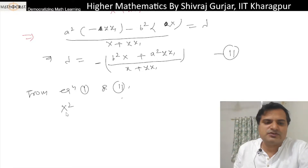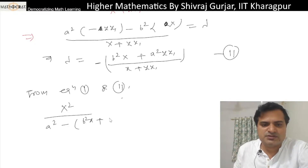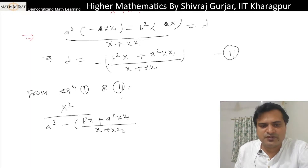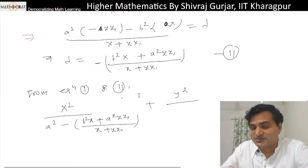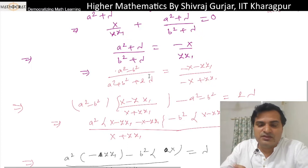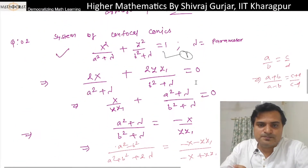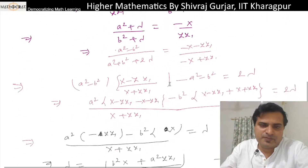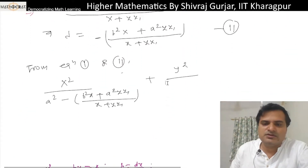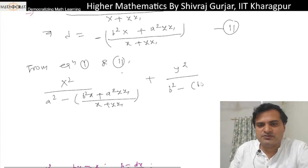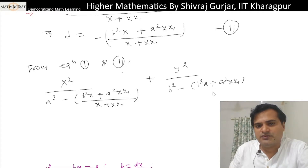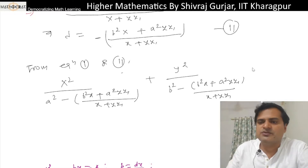Therefore x² divided by (a² + lambda), which is minus (b²·x + a²·y·y₁)/(x + y·y₁). And b² + lambda equals (b²·x + a²·y·y₁)/(x + y·y₁) equals 1. This question has been asked — in fact I think it has been asked twice.